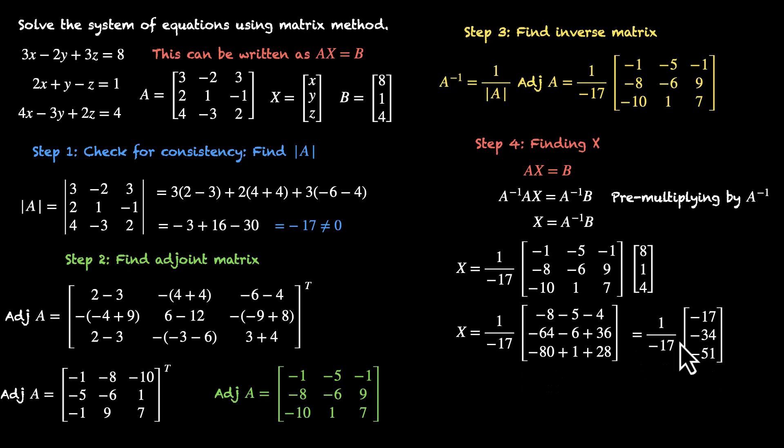So this becomes 1 by -17 times this matrix. Luckily, all three of them are multiples of 17. So we'll get a neat answer. Let's take -17 common. We have -17 by -17, which gets canceled. We have 1, 2, and 3, which means after doing all of this, we have our X matrix. That's 1, 2, and 3. But that's X, Y, Z. So X, Y, Z is same as 1, 2, 3. And these two matrices are equal, which means X is 1, Y is 2, and Z is 3. So after all of this hard work, we now finally have these three values, X is 1, Y is 2, and Z is 3.